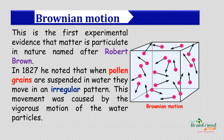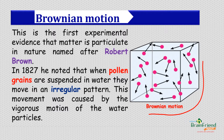The Brownian motion talks about the irregular movement of the particles of matter. This study was done by a scientist, Robert Brown, in the year 1827. He found out that the particles of matter move in irregular patterns. You can see this image here showing us what the Brownian motion looks like — various particles moving in various irregular patterns.